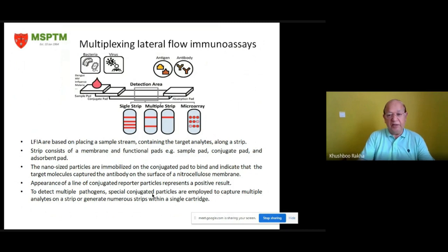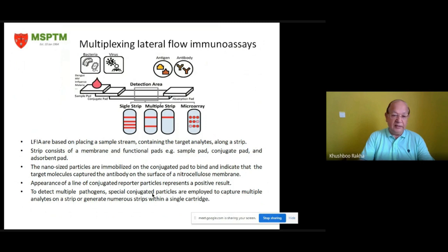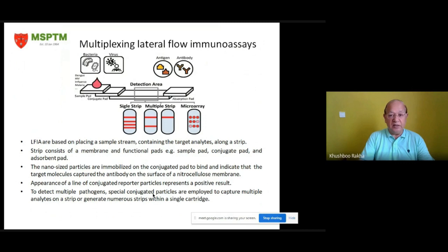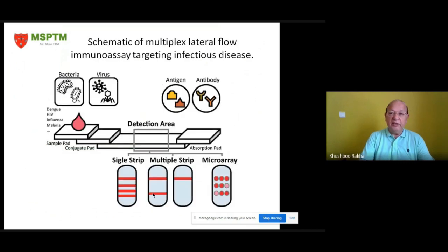Multiplexing lateral flow immunoassays are based on placing a sample stream containing target analytes along a strip. The strip consists of a membrane and functional pads — sample pad, conjugate pad, and absorbent pad. Nano-size particles are immobilized on the conjugate pad to bind and indicate target molecules captured by antibody on the surface of a nitrocellulose membrane. Appearance of a line of conjugated reporter particles represents a positive result. To detect multiple pathogens, special conjugated particles capture multiple analytes on a strip or generate numerous strips within a single cartridge. This schematic of multiplex LFIA targeting infectious diseases — including dengue, HIV, influenza, and malaria — is shown and explained here.